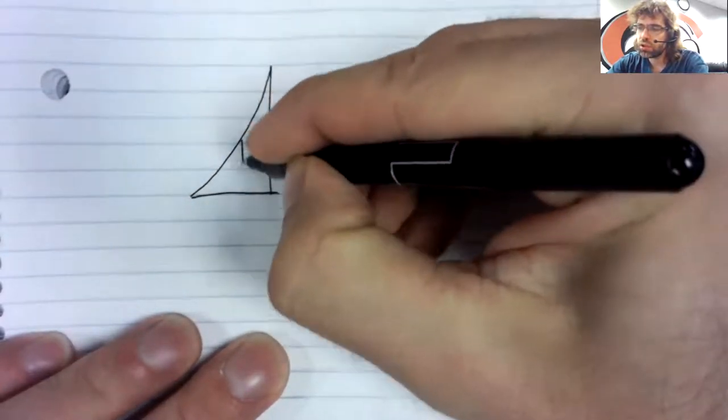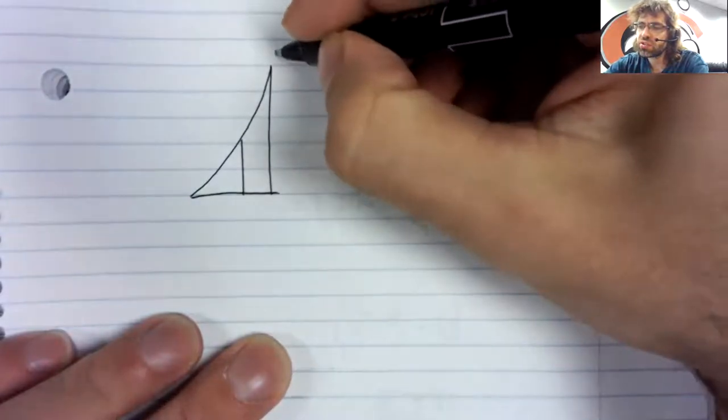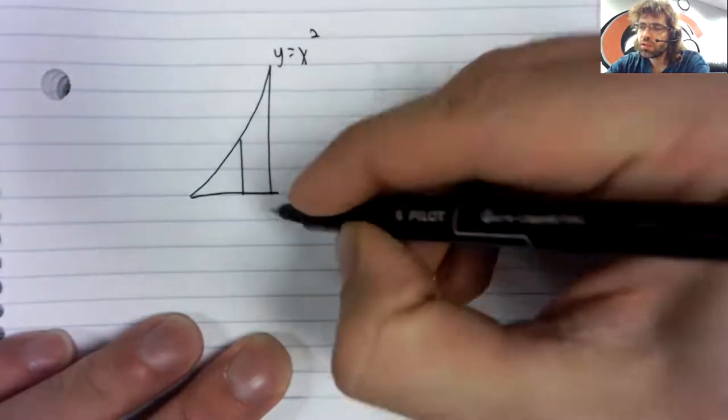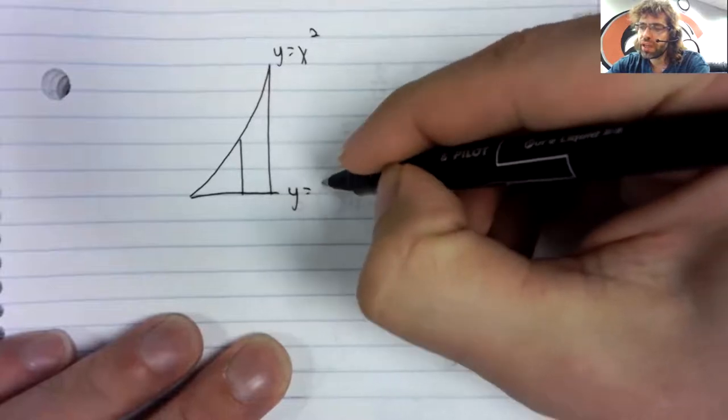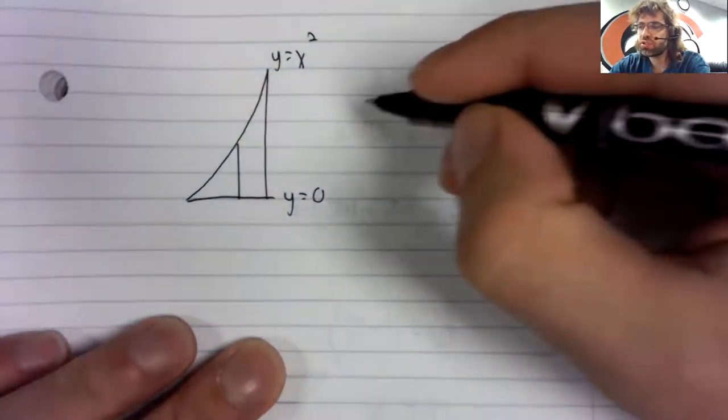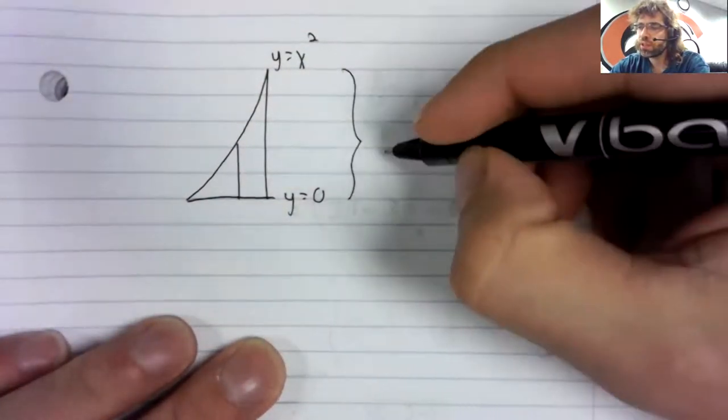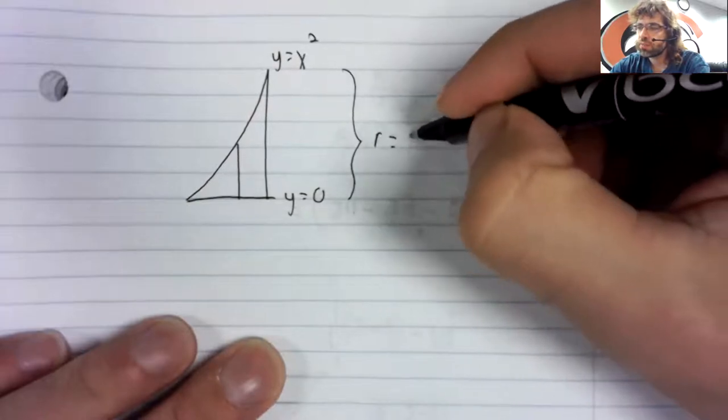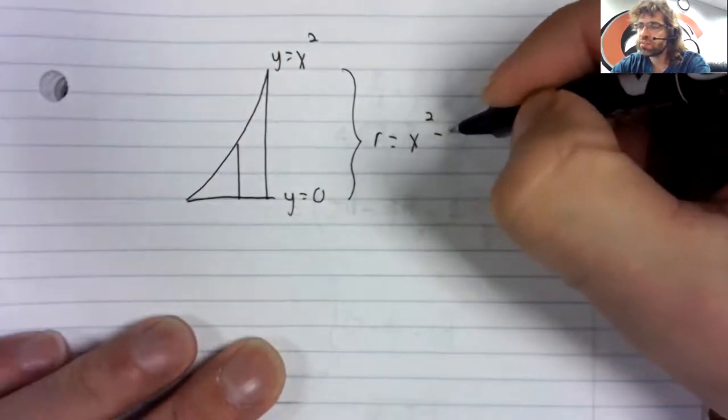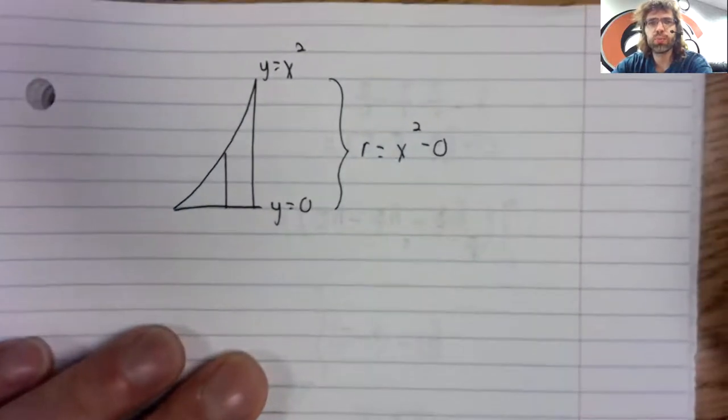Here's the radius. So we're going from x squared to zero.